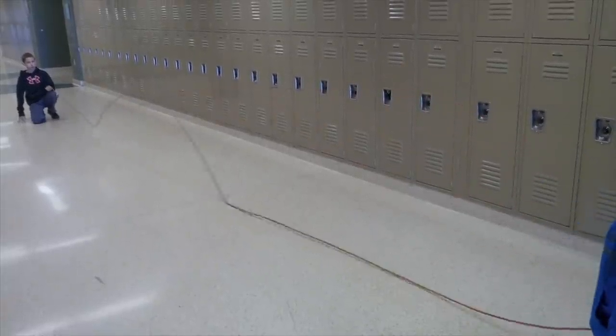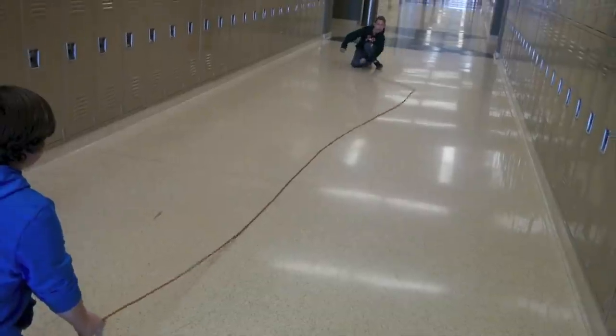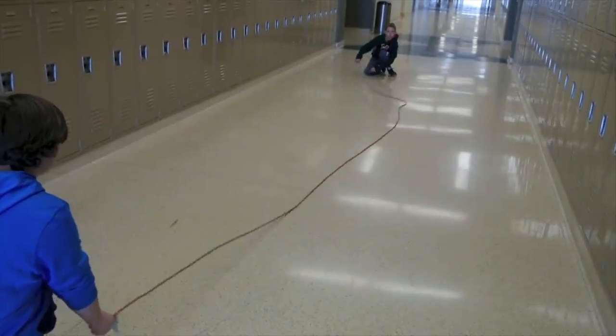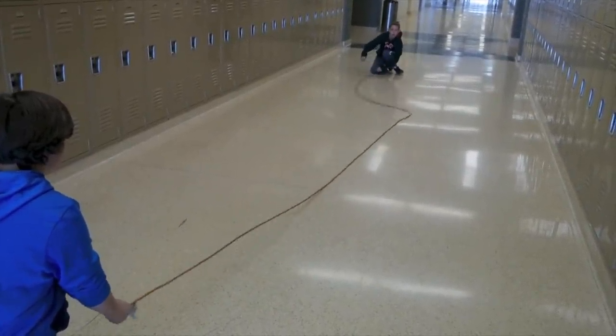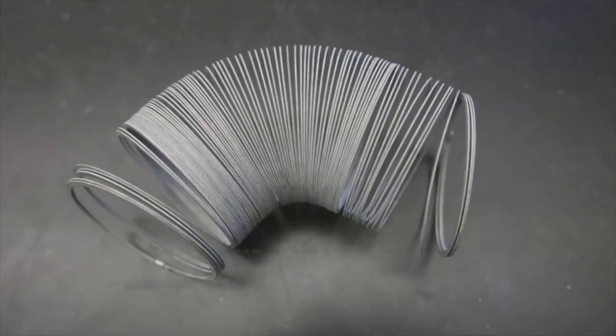To make waves in rope it's as simple as flicking it up and down or side to side. We could also use a slinky.